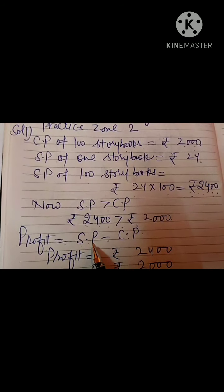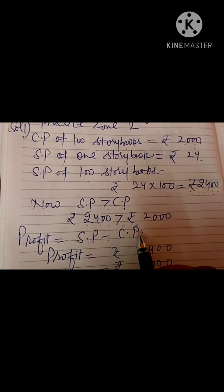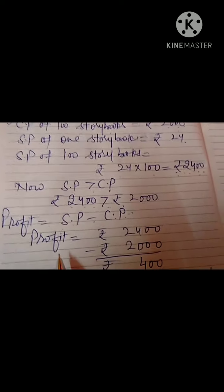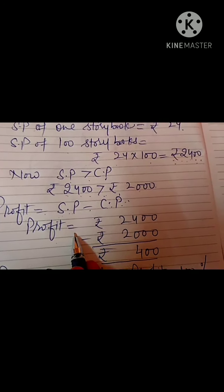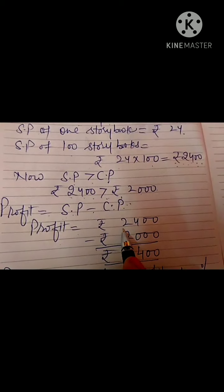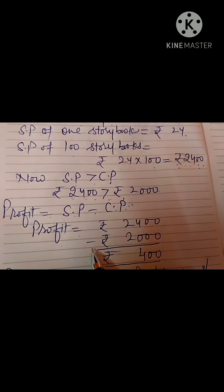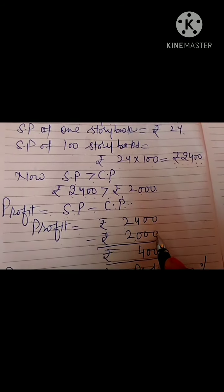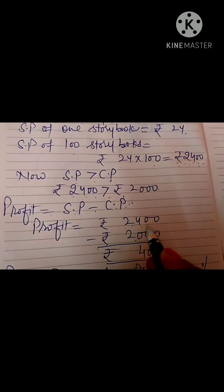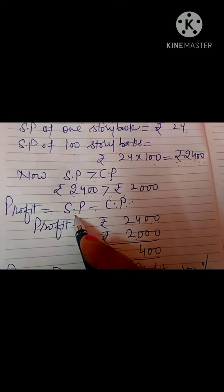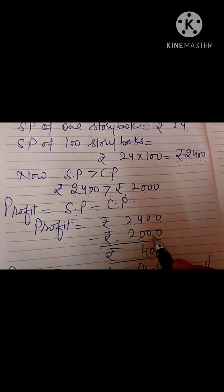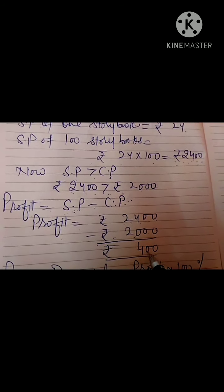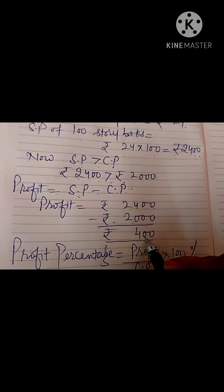So profit will be equal to selling price minus cost price. SP means selling price and CP means cost price. Profit is equal to rupees 2400 minus rupees 2000 — here 2400 is selling price and rupees 2000 is cost price. After subtracting you get rupees 400, meaning this is the profit.